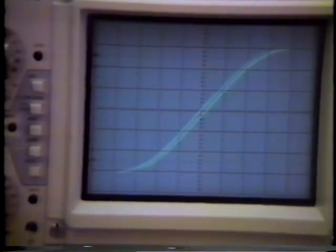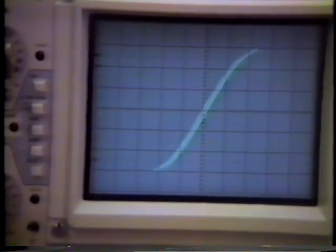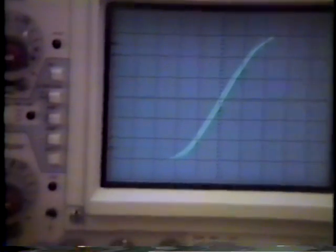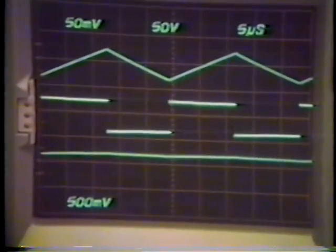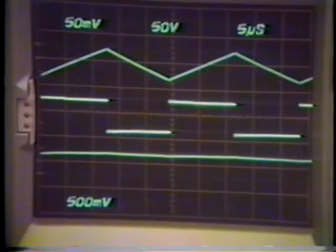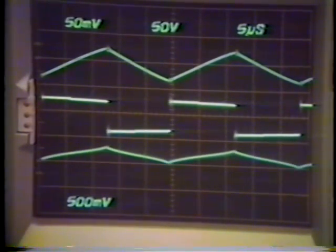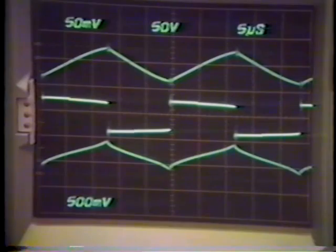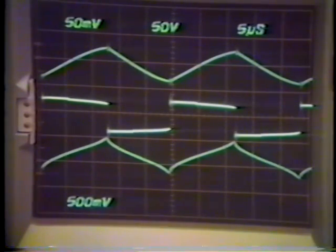We can now observe the same effect on the time domain waveforms on the scope here. And notice again, that if we have a very small air gap, the current drawn is relatively small. But by increasing the air gap, the current drawn becomes larger and larger because of reduced inductance.